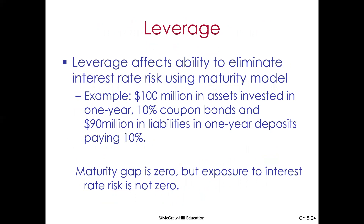Although the maturity model is superior to the repricing model in that it considers market value of assets and liabilities where the repricing model only considers book value, the maturity model also has two weaknesses. While a strategy of matching assets and liabilities moves the financial institution in the direction of hedging itself against interest rate risk, it is easy to show that this strategy does not always eliminate all interest rate risk. First, it does not account for the degree of leverage in the financial institution's balance sheet. Second, it ignores the timing of cash flows from the financial institution's assets and liabilities.